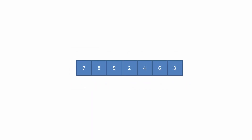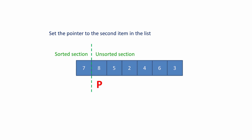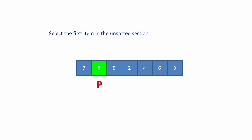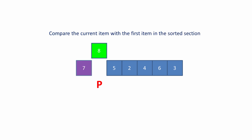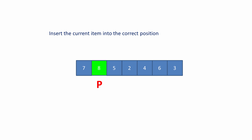We're going to use an insertion sort to sort these numbers into ascending order, with the smallest on the left and the largest on the right. Begin by placing a pointer at the second item in the list. The pointer separates the sorted section of the list on the left from the unsorted section on the right, so the pointer is pointing to the first item in the unsorted section. Select the first item in the unsorted section and call this the current item. Compare the current item with the first item in the sorted section. Now in this case the 8 is in the correct place, so insert the current item into the correct position.